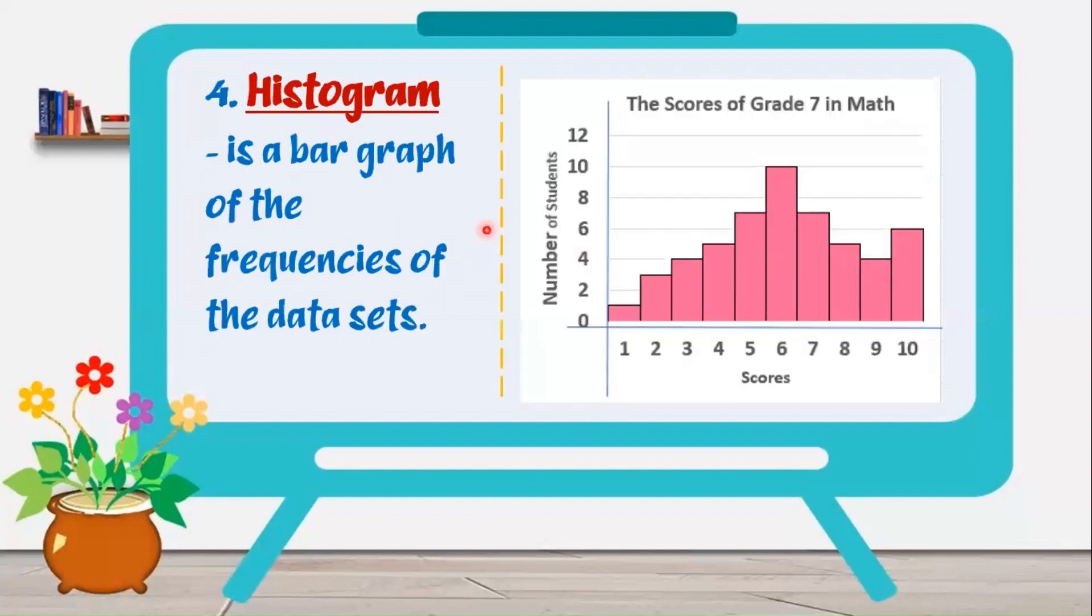Next is histogram. Histogram is a type of bar graph of the frequencies of the set of data. We have here in the example the scores of grade 7 in mathematics. Here, reflected in the x-axis are numbers because histogram is advised to use for numerical data or quantitative data. So we have here the scores. These are numerical.